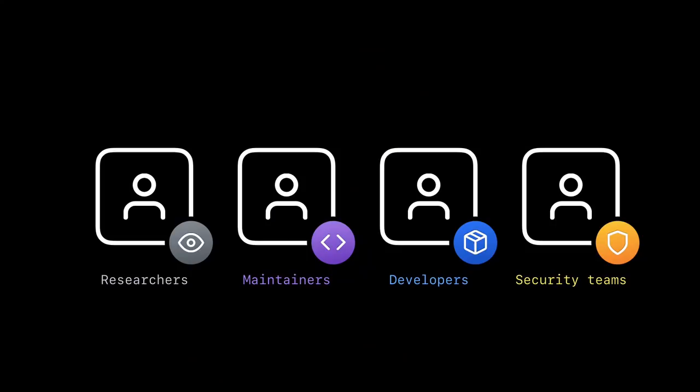At GitHub, we believe that the power of that interconnected community that helps you build software also helps you build more secure software. If you think about all the people involved in keeping stuff secure: researchers who are finding issues, maintainers who are having to go fix them, developers who are having to stay on top of their dependencies, and security teams who are keeping an eye on it all. We need to help everyone collaborate better so we can be more secure. Today I want to share some of the tools that GitHub is providing to help do that.